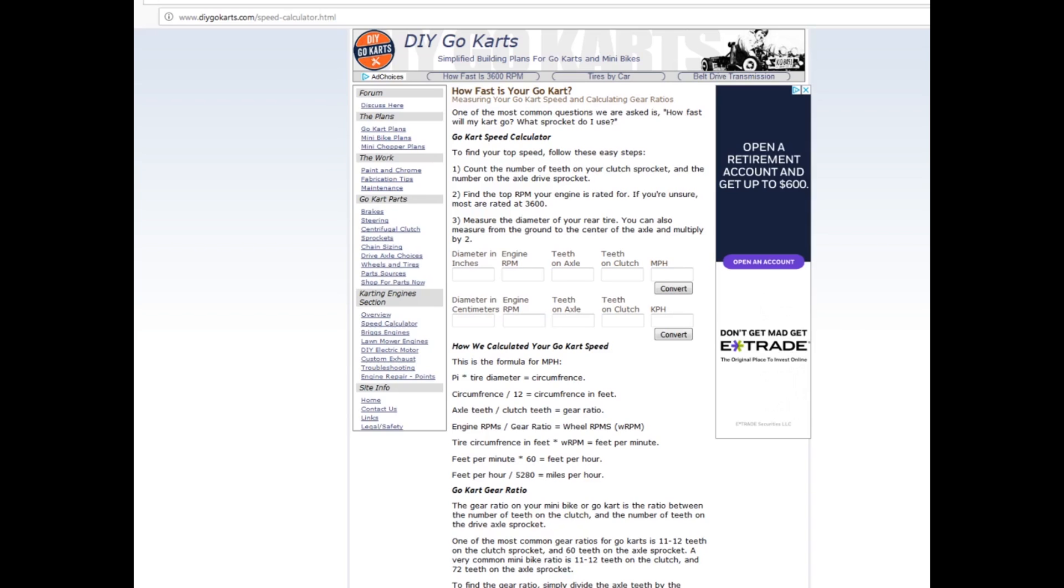We're at our PC and we are on our online calculator. I will put a link to this webpage for the calculator in the description. Pretty simple. Inches in diameter is going to be the diameter of our drive tire, which in our case is 14 and a half inches. We're not sure about the engine RPM. That's what we're trying to figure out. So we're going to start at the low end. The Predator 212 seemed to be governed anywhere between 3 and 4000 RPM. So we're starting at the bottom, set it to 3000. Number of teeth on the axle in our case is 57. Teeth on the clutch is 12. And we're going to hit convert and see what our miles per hour are.